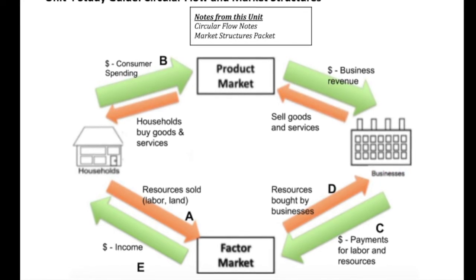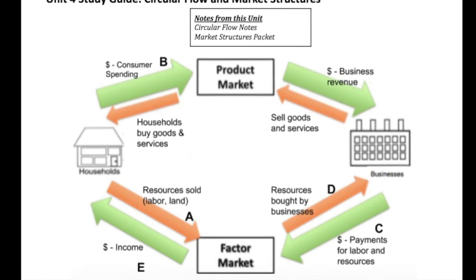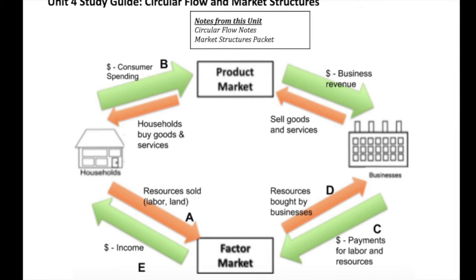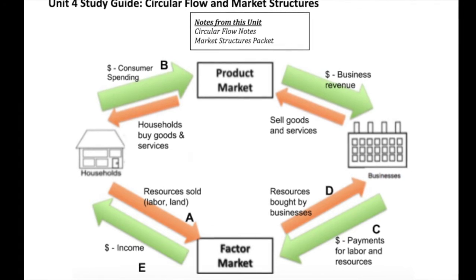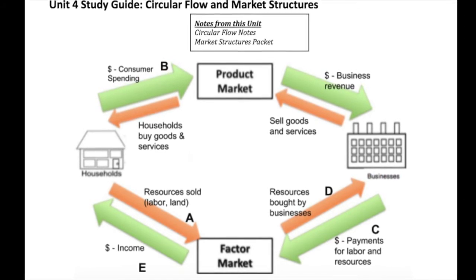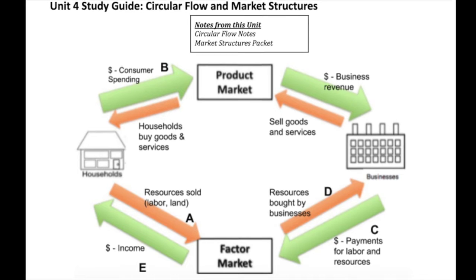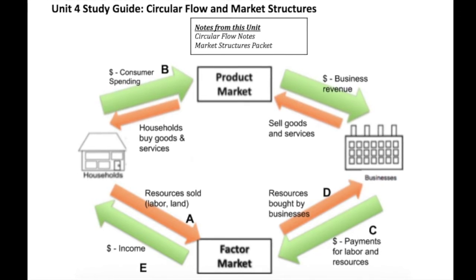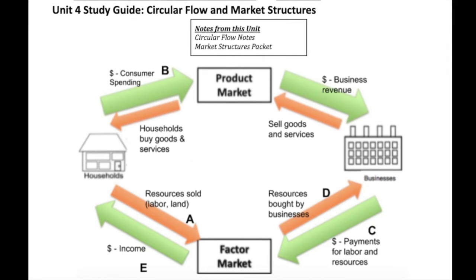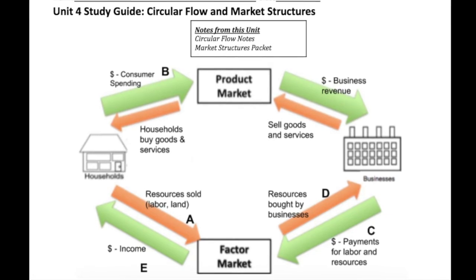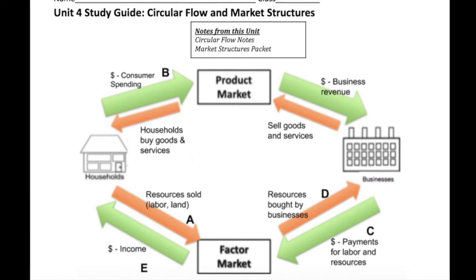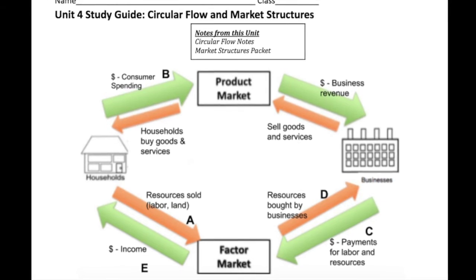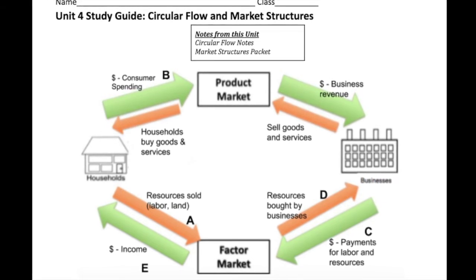Number seven says identify the following on the circle above. Abby goes to the career fair to look for employment — Abby's not employed, but she's selling some sort of productive resource. So A is going to go up from households to the factor market on the inside circle. B says Alex buys a new pair of shoes at Target — he's buying, so from households the arrow goes over to the product market. That's where B goes.